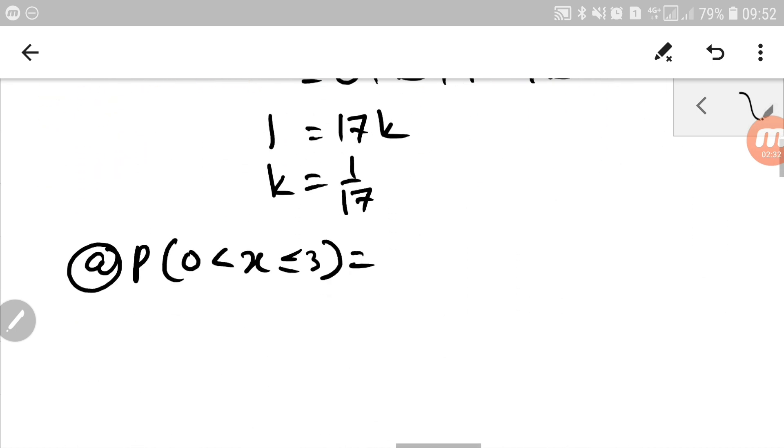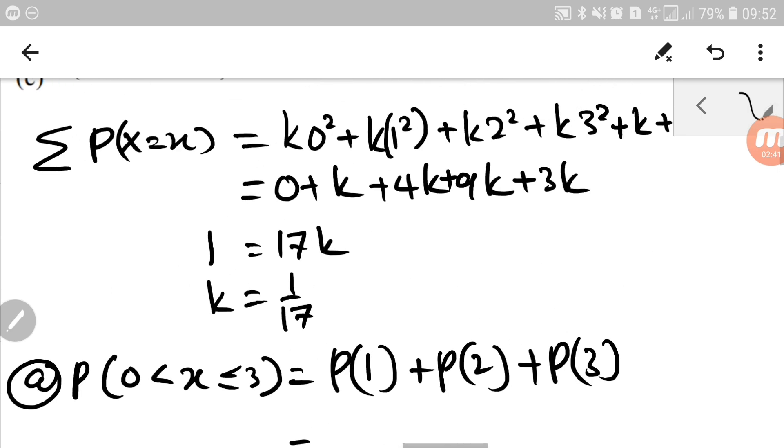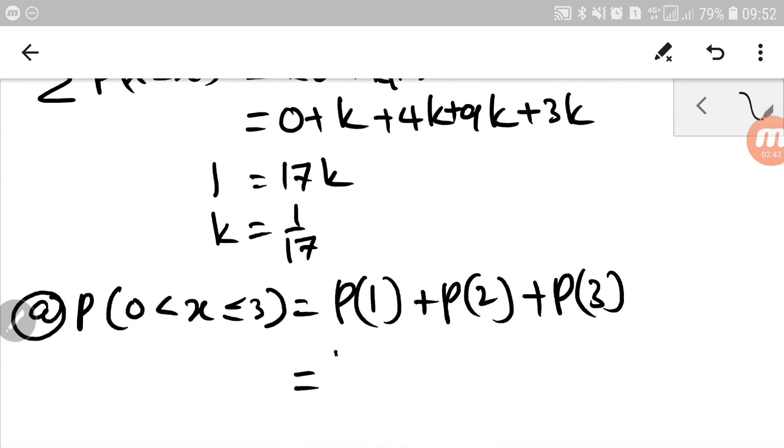So the question asks the probability of 1 plus probability of 2 plus probability of 3. So probability of 1 is 1 over 17, 1 square